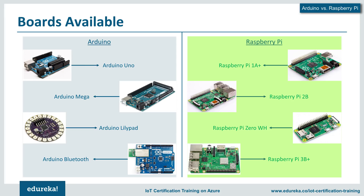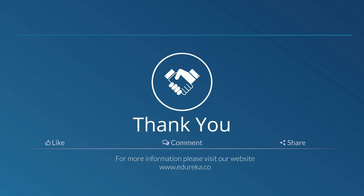Let's look at the different boards that both have had over time. The Arduino has been around for quite a while and has had multiple boards over the years with different functionalities — the Arduino Uno, Arduino Mega, Arduino LilyPad, and the Arduino Bluetooth have been the more popular ones. Similarly, the Raspberry Pi, despite being relatively new, is on its third generation, with each model better than the previous. The Raspberry Pi 3B+ is its latest and most powerful development board yet.